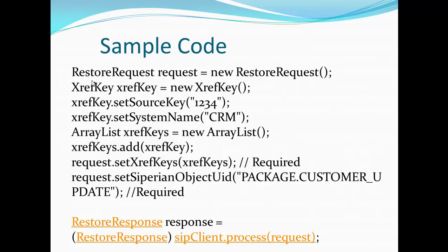Once we populate the XRefKey, we can pass one or multiple XRefKeys to the RestoreRequest. In this example, we create one XRefKey, then create an ArrayList object and add the XRefKey to it. We then put that ArrayList into the request object. In the request object, we also set the SapIn Object UID — here it is the package, though we can also use a base object. Finally, use the SapIn client object and call the process method, passing the request object.